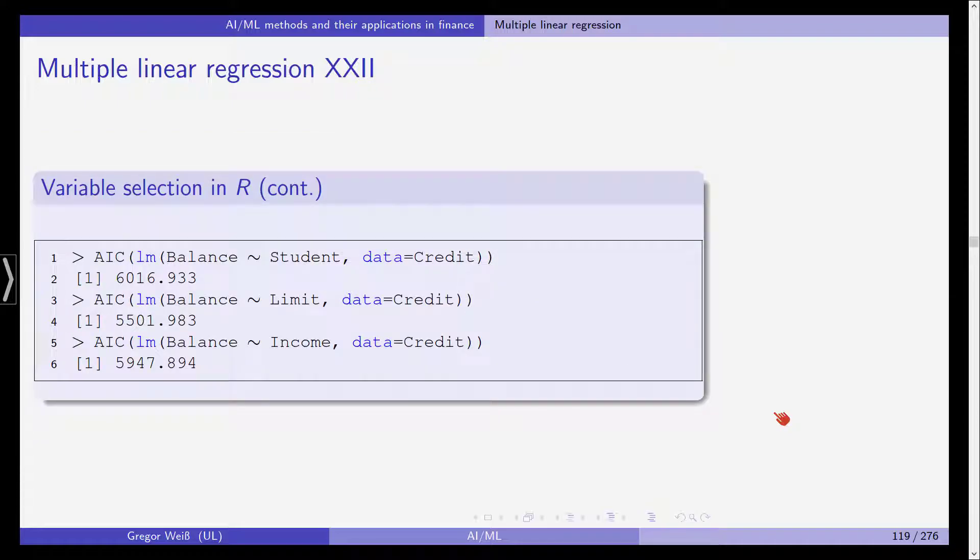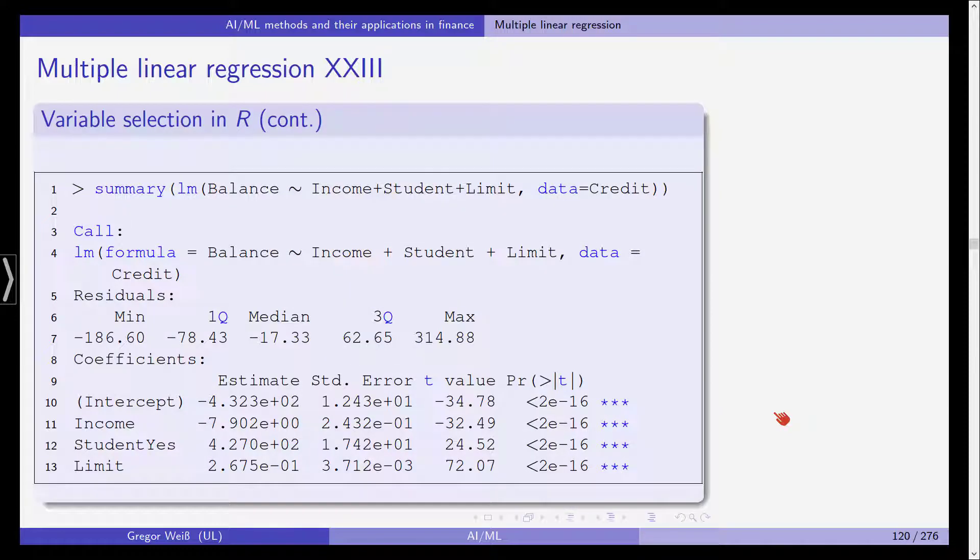We now look at the AIC. You can see the Akaike's information criterion for these three models. And with the AIC, it should be viewed as lower numbers being better, and lower numbers signaling a better model fit. So actually, the second one is the lowest AIC. And we can now see how a multiple linear regression would fare if we include all three variables.